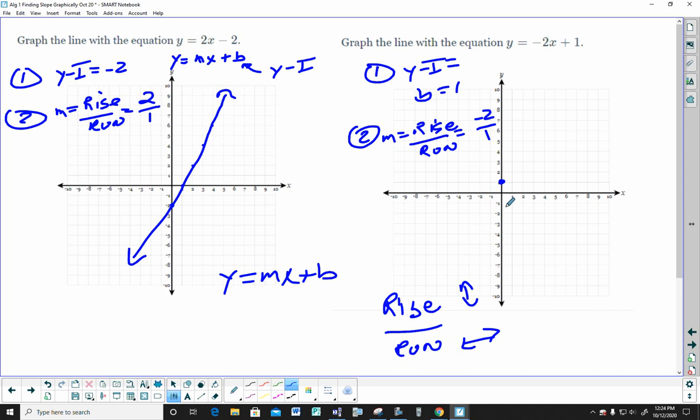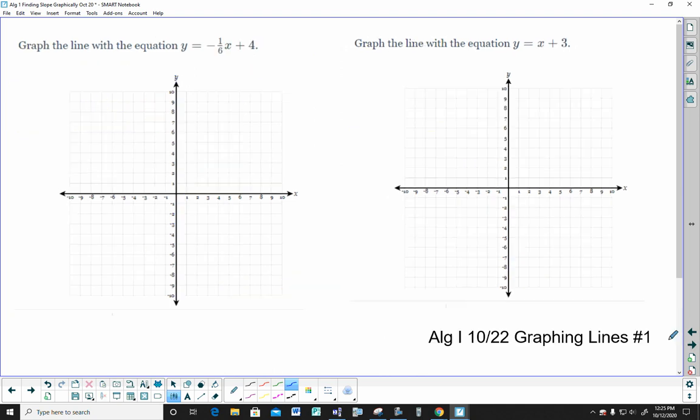If it's a negative number, it means you go down 2 units. The run is positive 1, so I go over 1. Down 2 over 1. Down 2 over 1. Down 2 over 1. I'm just illustrating going down 2 and over 1.